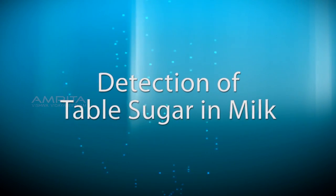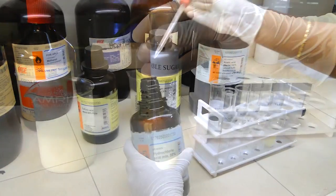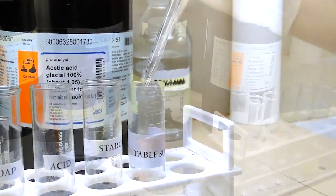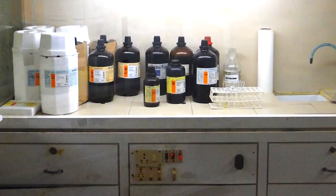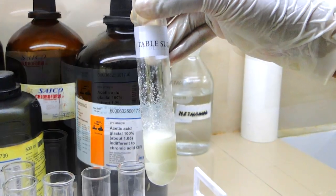Detection of table sugar in milk. Pour 10 ml of milk into the test tube labeled table sugar and using a pipette, add concentrated HCl into the tube. This should be done in the fume hood. Now shake the test tube gently so that the milk gets precipitated.